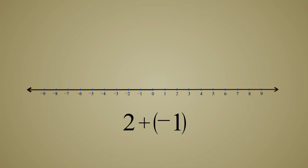Adding a negative integer means moving that number of units to the left. In fact, adding a negative number is exactly the same thing as subtracting a positive number. So we can think of subtraction as just the addition of a negative number.